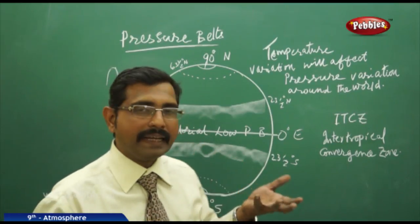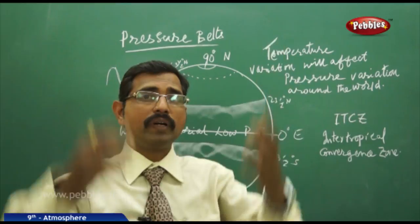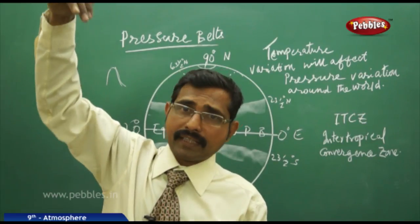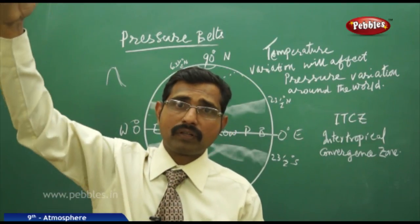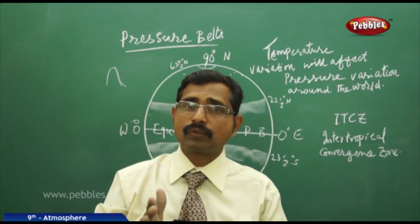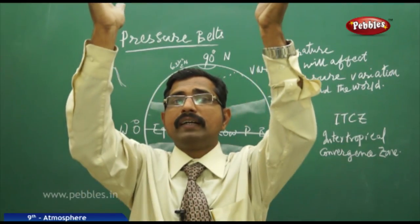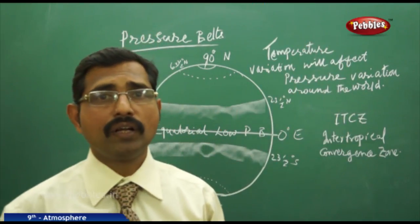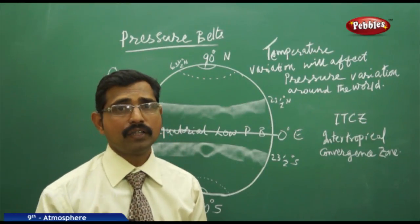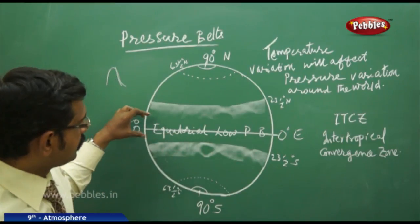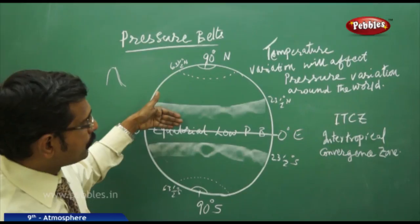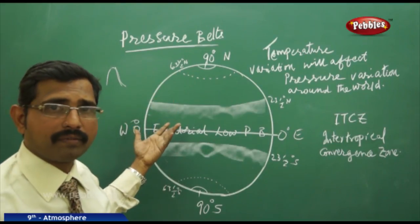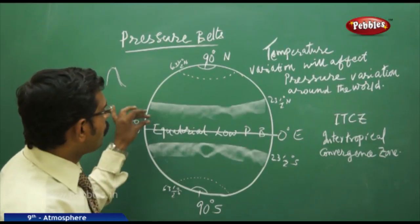Once the heated air molecules go upward, they don't return in the same path. Being gaseous, they spread in different directions. Some molecules move towards the north and some towards the south part of the globe.